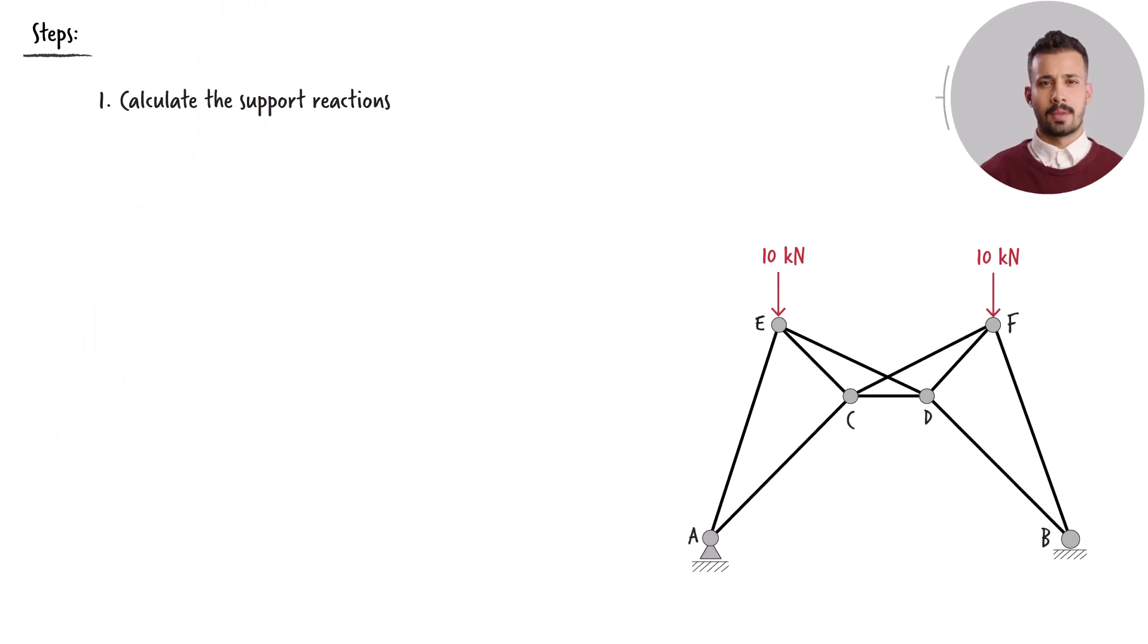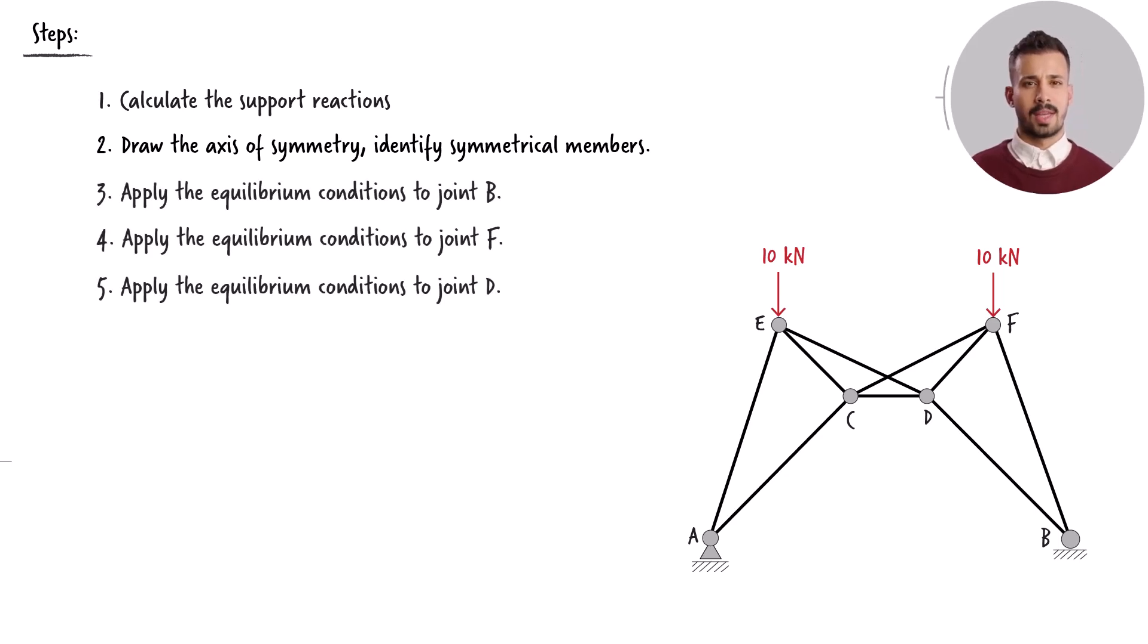To begin, my first step entails calculating the support reactions. Subsequently, I will pinpoint the axis of symmetry and identify the symmetrical truss members. In the final stages of the analysis, I will focus on three specific joints to determine the member forces in the right half of the truss. Taking into account that the forces within the left half of the truss mirror those within the right half, we can then draw our analysis to a conclusion.